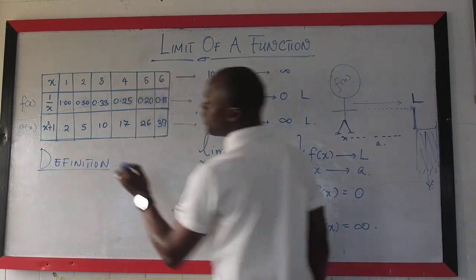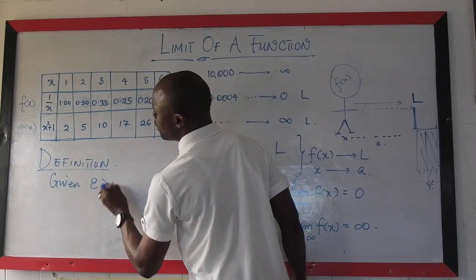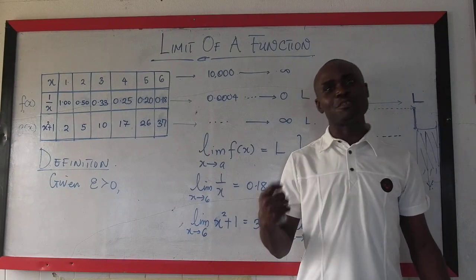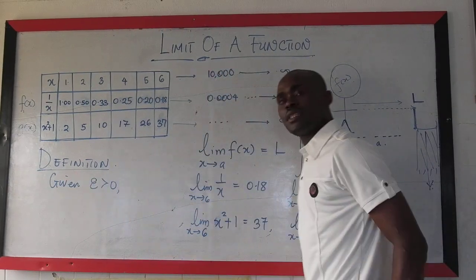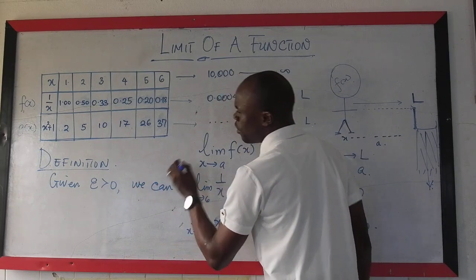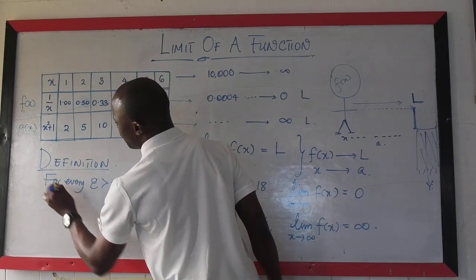The definition, the mathematical definition is that given epsilon greater than 0. So, epsilon is a small positive number, arbitrarily small, considered to be arbitrarily small. So, given epsilon greater than 0, we can find, or we can use the word for every, for every, that's better, for every,